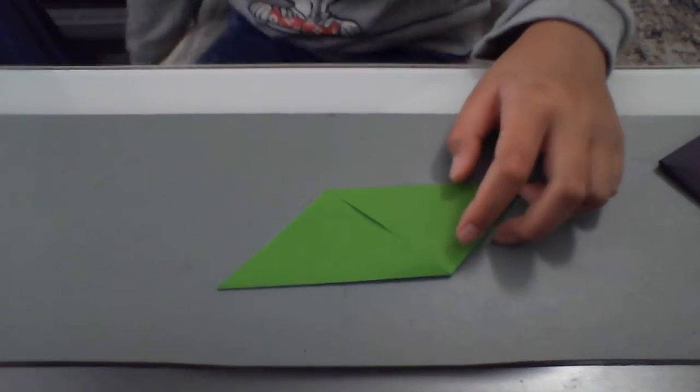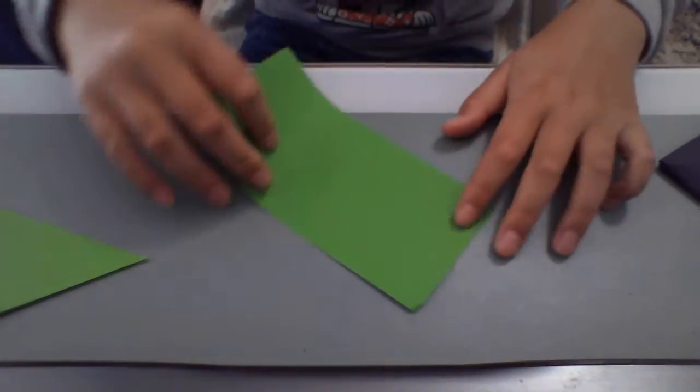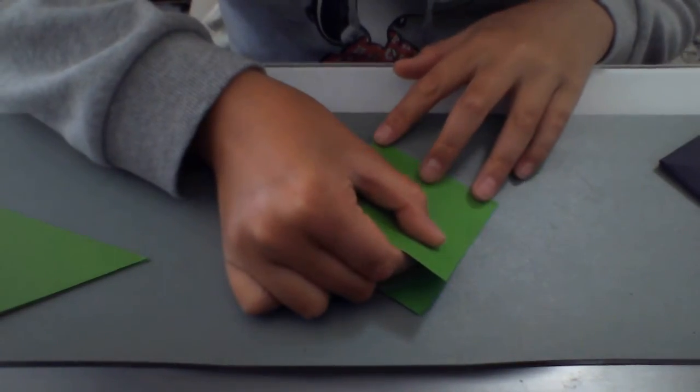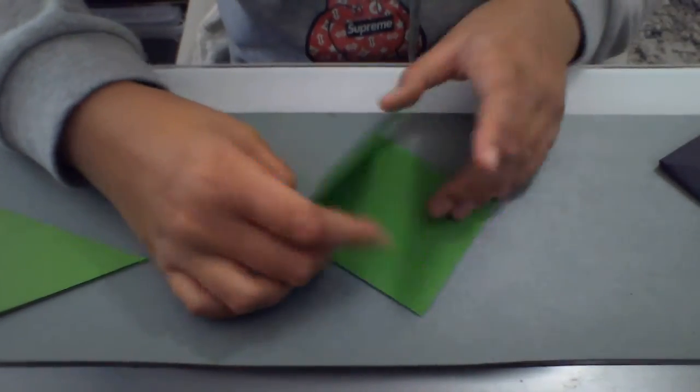From there, you want to do the same thing with the other one. Fold it in half so that you get a square. Unfold.